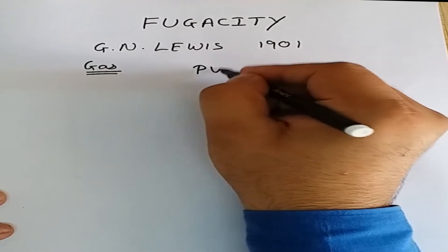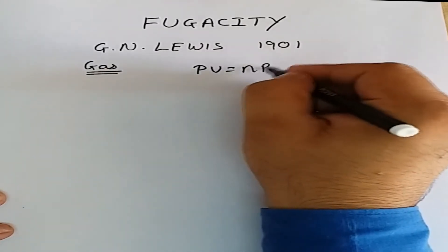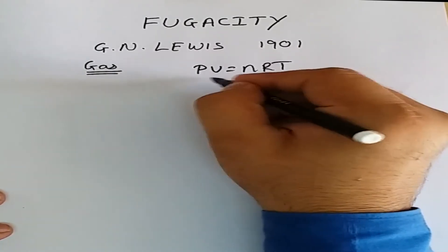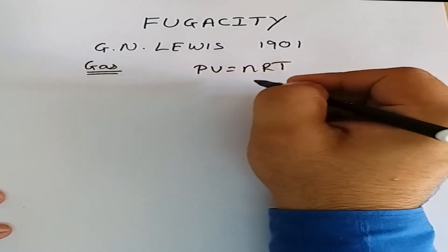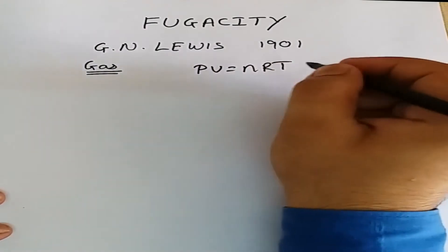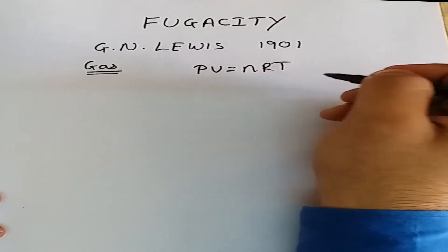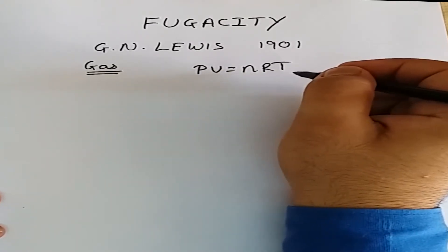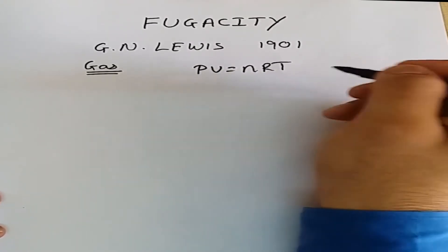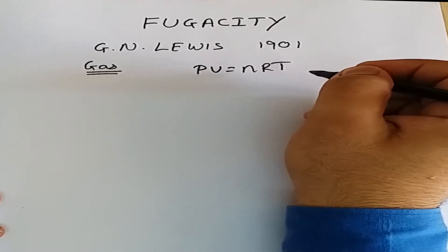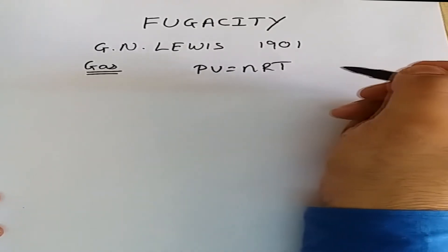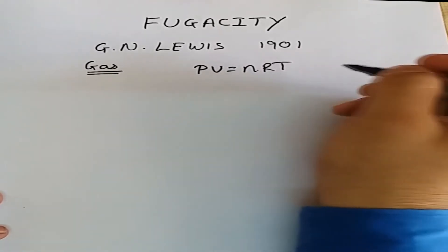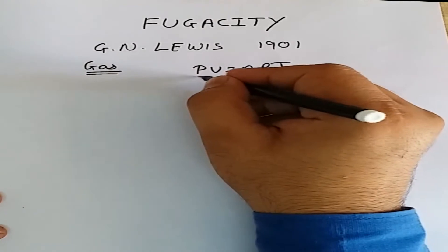As we all know, no gas is an ideal gas. If gases are not ideal, they will not follow the ideal gas equation PV = nRT. All gases will depart from ideal gas behavior. This relation PV = nRT was derived by taking certain assumptions, and all real gases will not behave ideally.